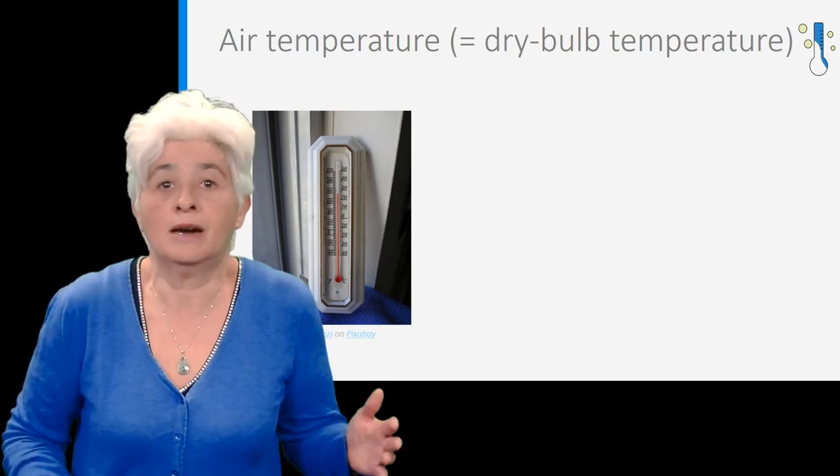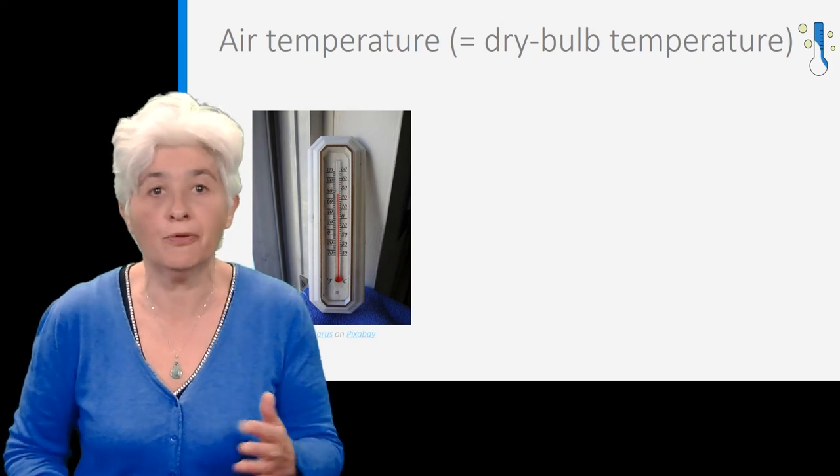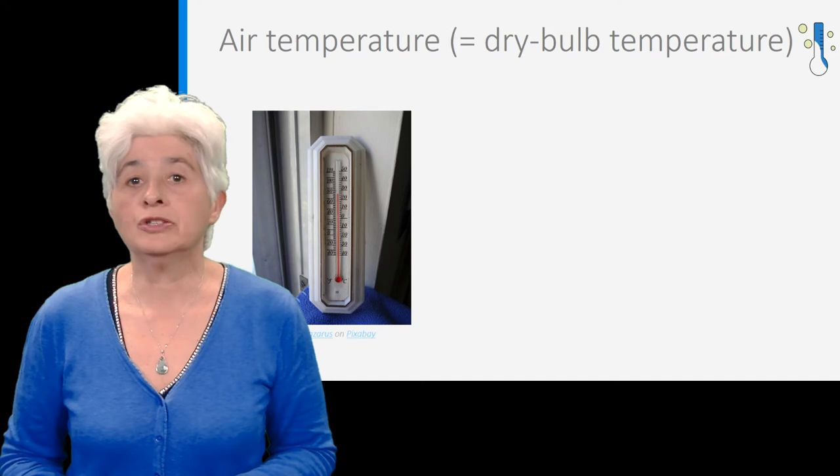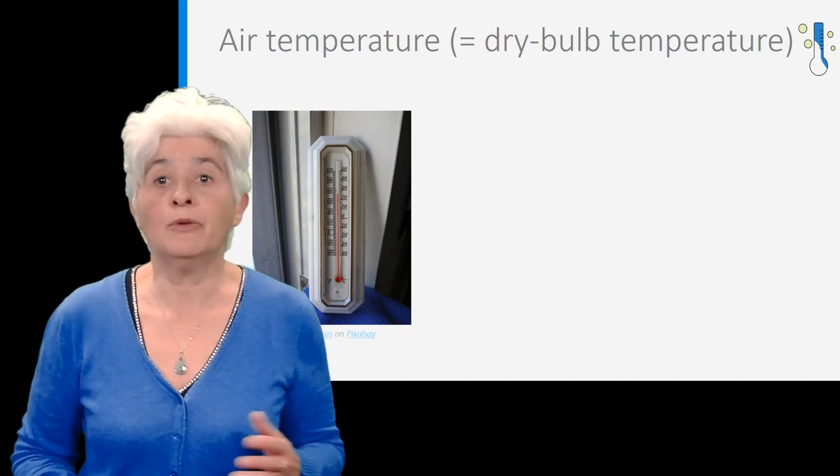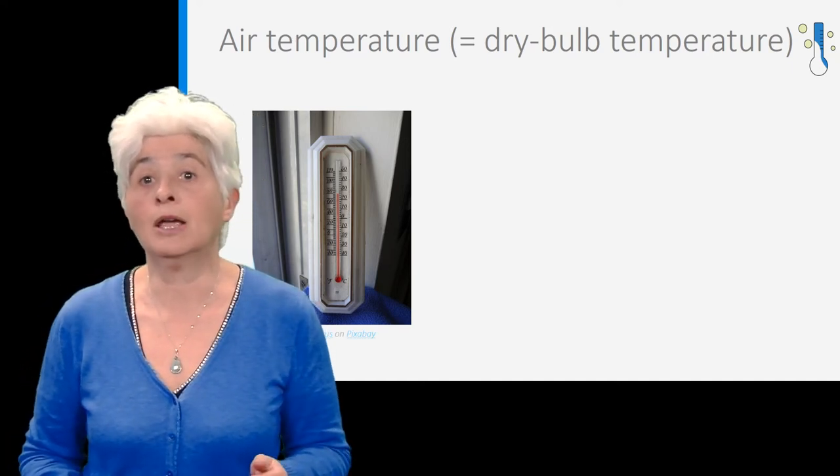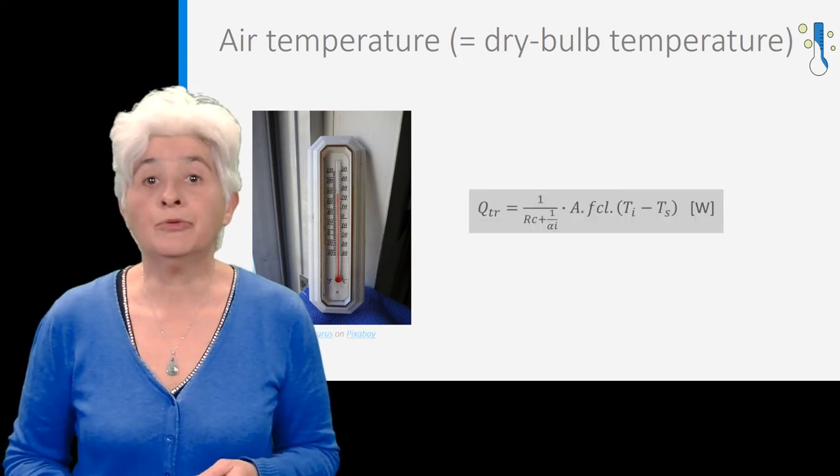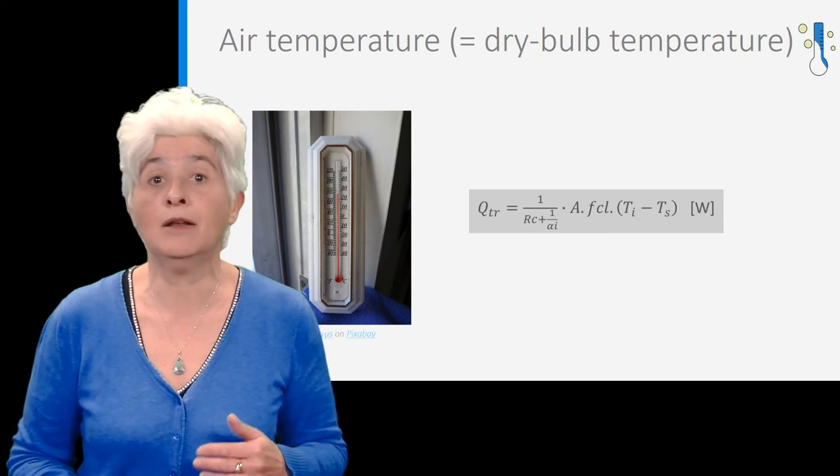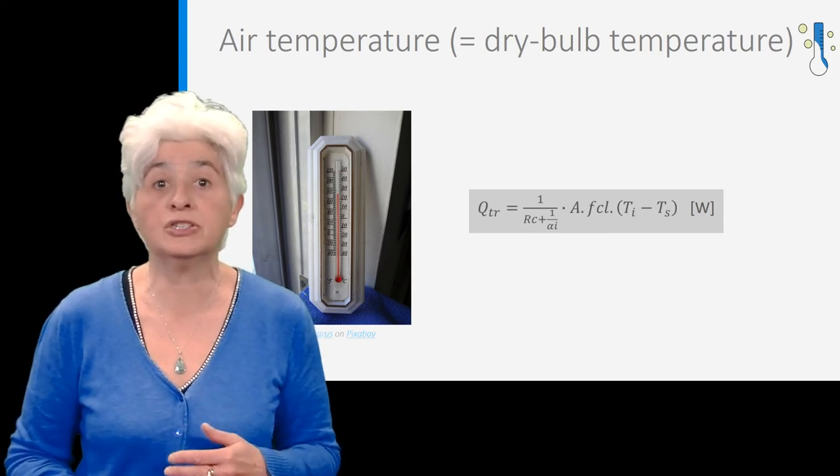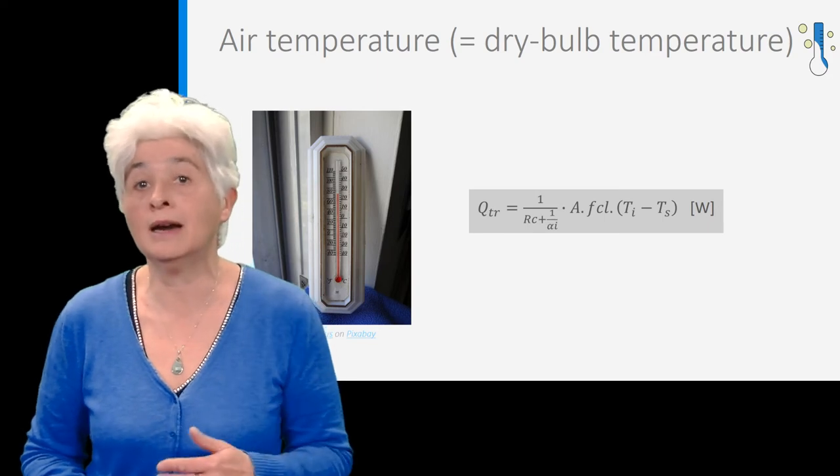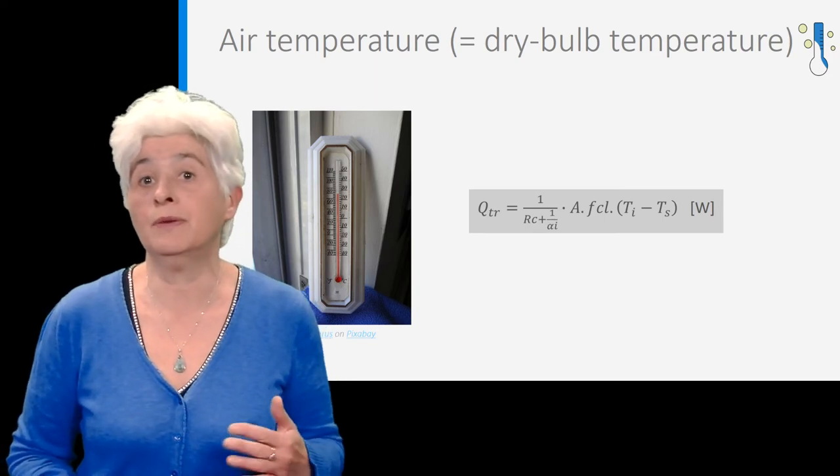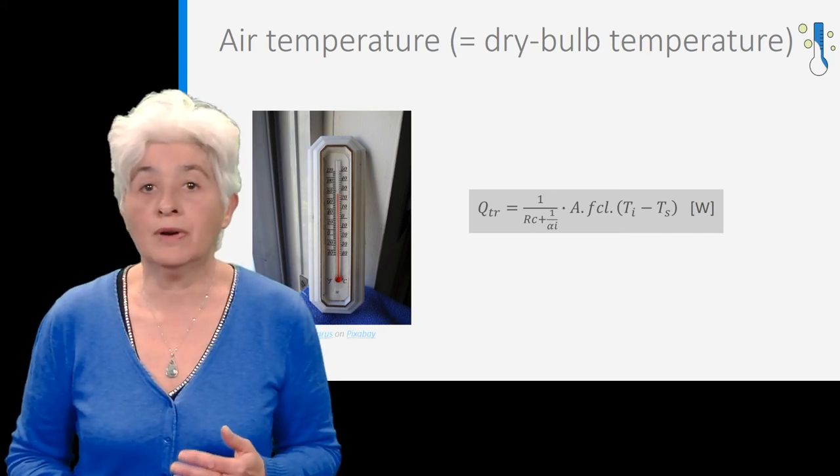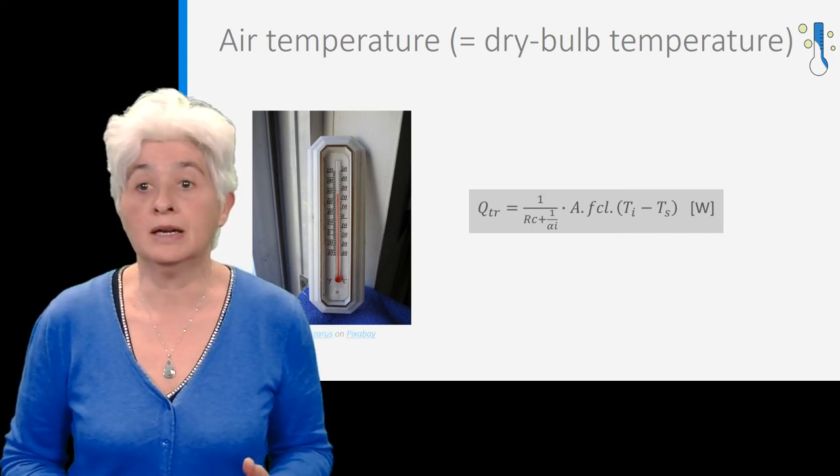We have seen in another lecture that heat losses or gains between human body and surrounding air are determined by an equation accounting for body surface area corrected by a clothing factor FCL, thermal resistance of clothing RC, convection coefficient between clothing and air, and finally the temperature difference between air and skin. So, the body thermal balance is very much dependent on the air temperature.